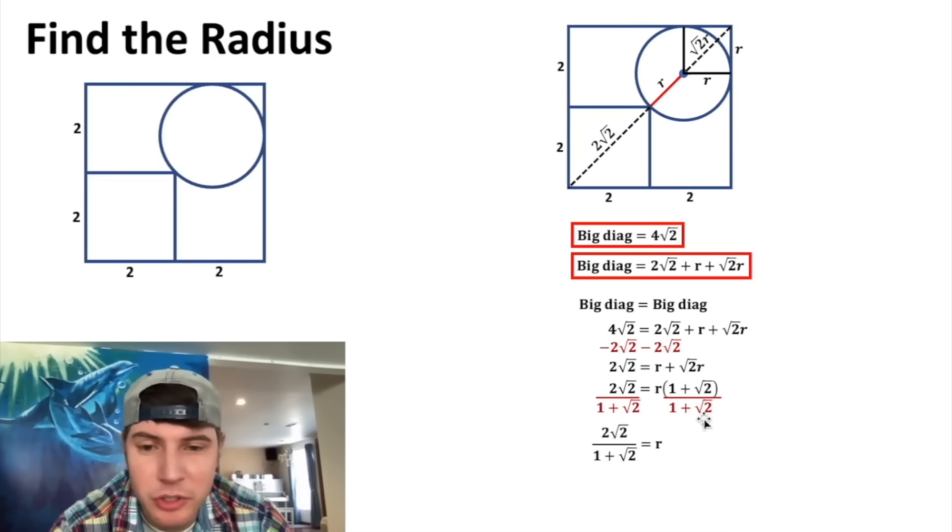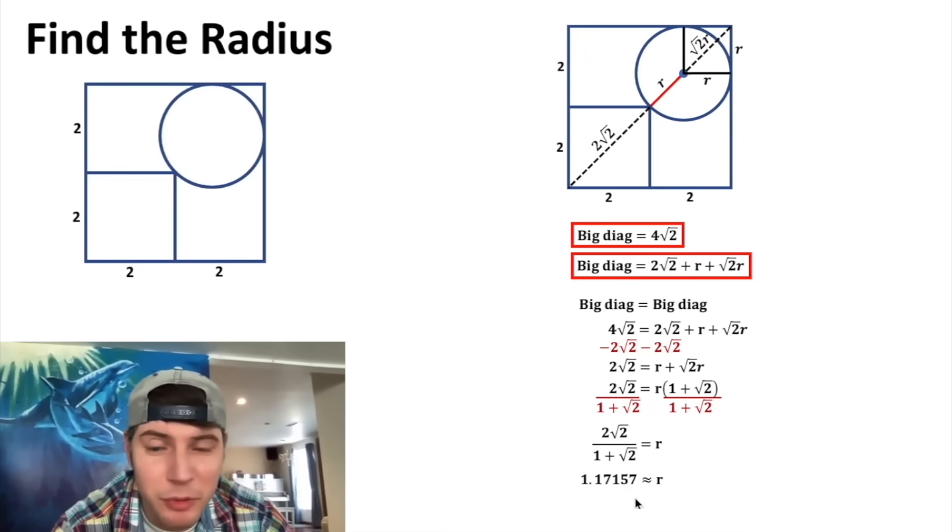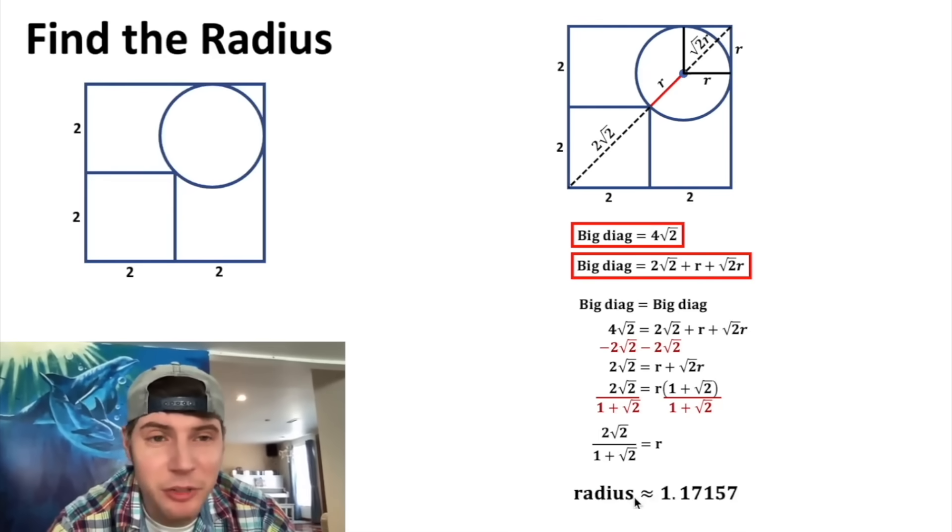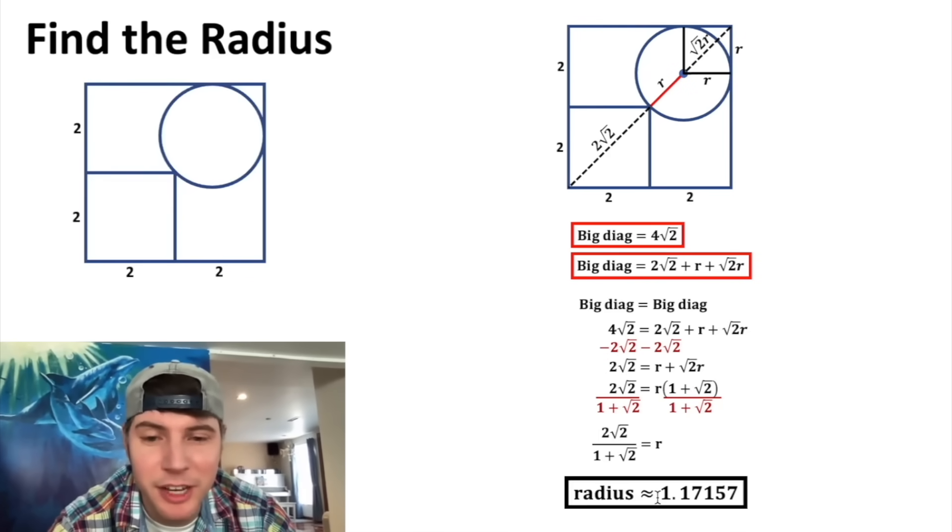And we can plug it into a calculator and get a decimal approximation of 1.17157, and that keeps going, it's irrational. But now we have the answer to our question: the radius is approximately 1.17157, and we can put a box around that. How exciting!